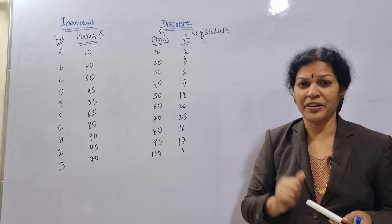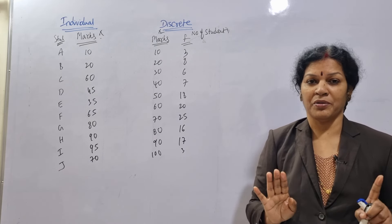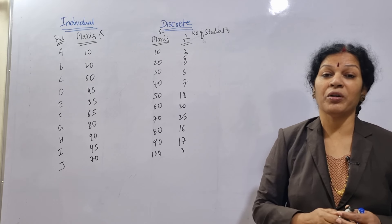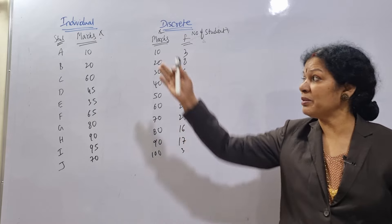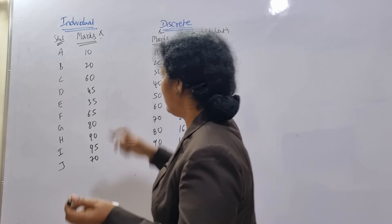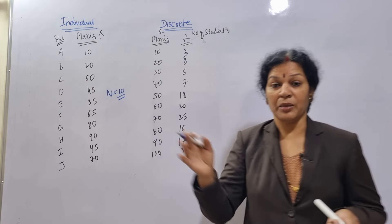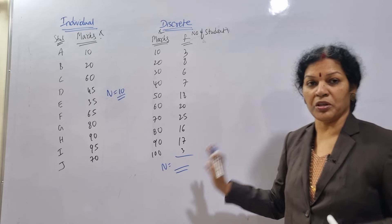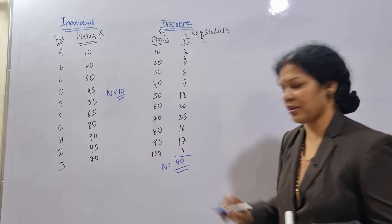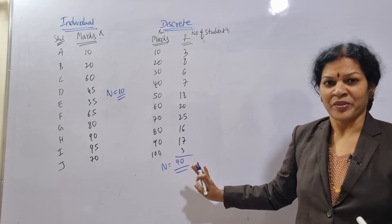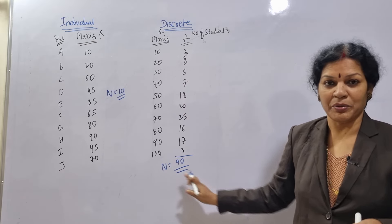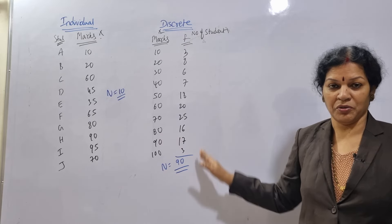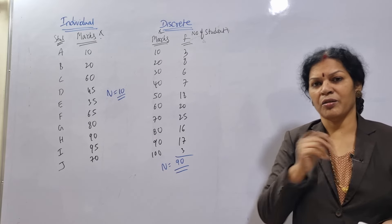In individual series, was frequency given? No. When frequency is not given and only the marks are listed simply, that is individual series. In individual series, n — number of observations — is 10 (10 members). In discrete series, n is the total of the frequency. For example, if the total frequency is 90, then n is 90. So this is about discrete series.